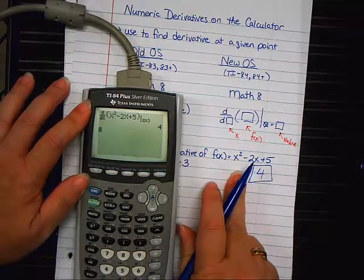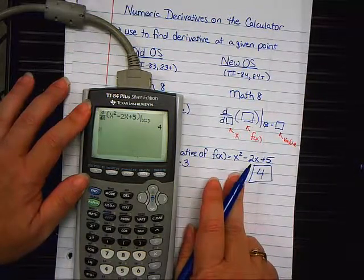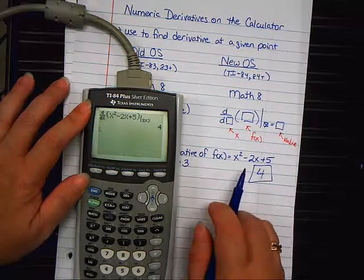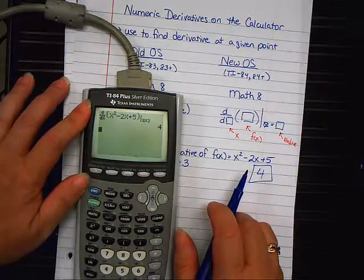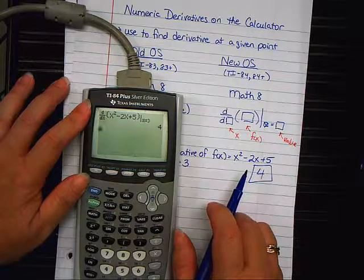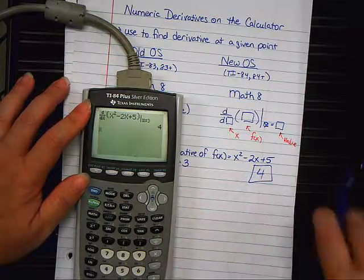So, basically what it did is it took the derivative of this function and it plugged a 3 in for you and gave you 4. Now, that's not a hard one to do by hand. But when they are hard to do by hand, this is very nice to use. Any questions on the 84 method?